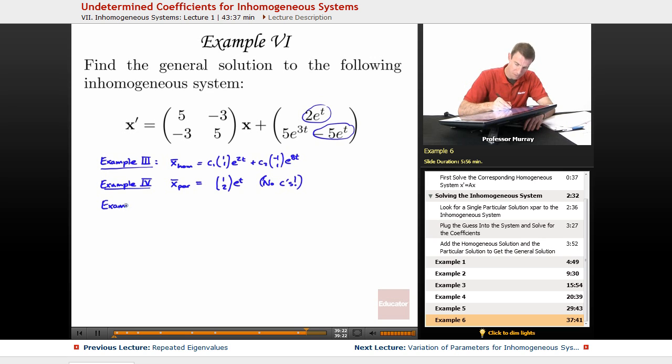And then example 5, that was where we found a particular solution to account for the e to the 3t term, and that turned out to be (3, 2) e to the 3t.